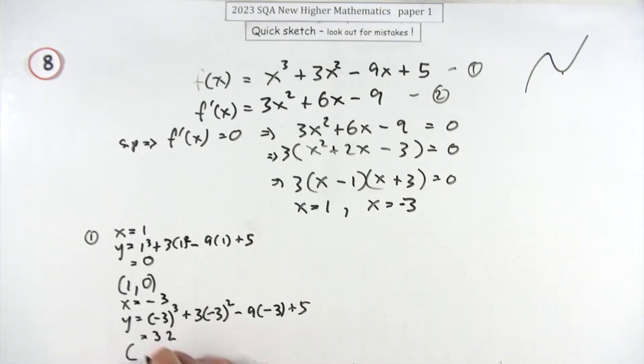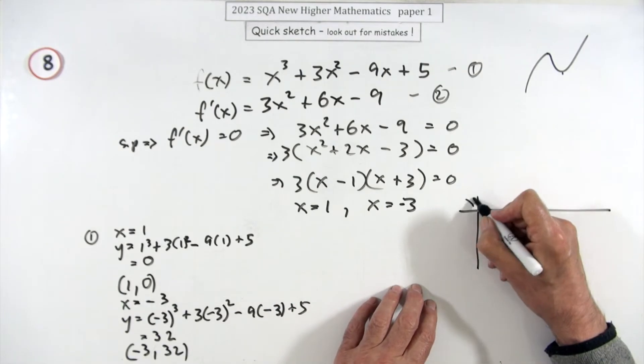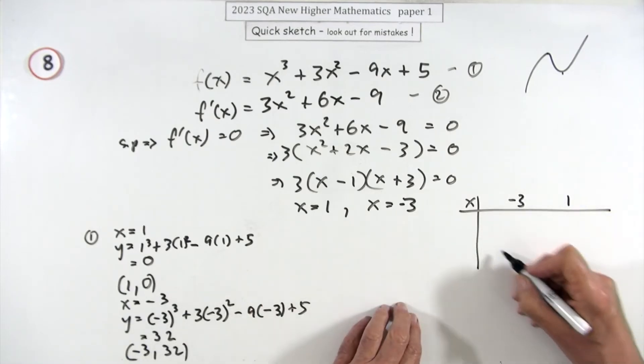So all you've got is 27 and 5, which is 32. So there's the second point: negative 3, 32. That's that one there.